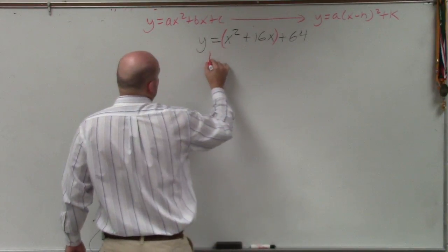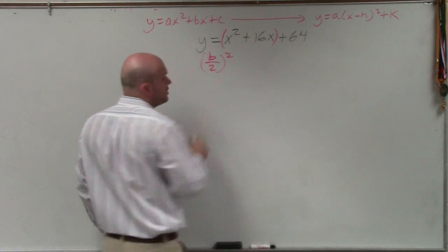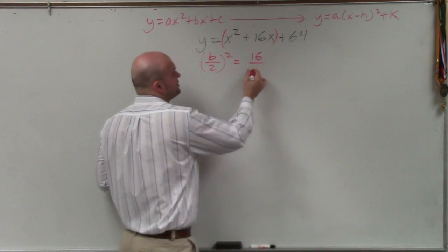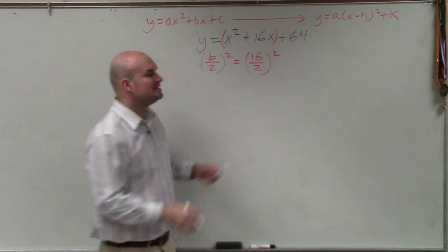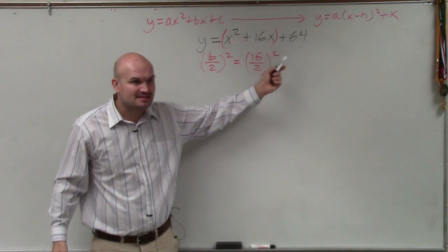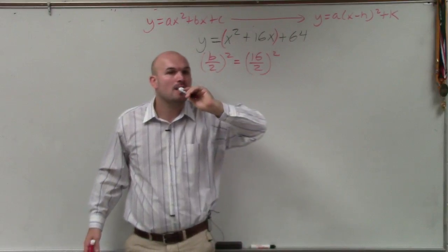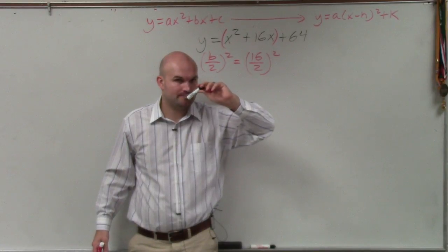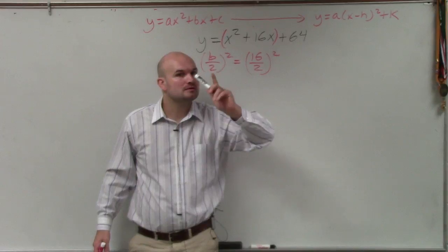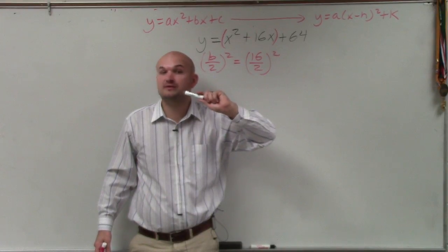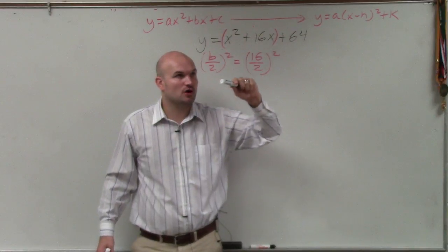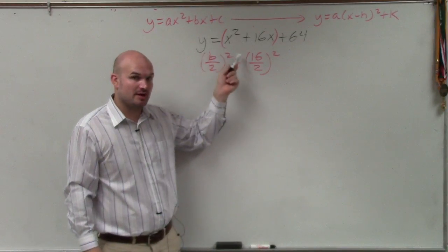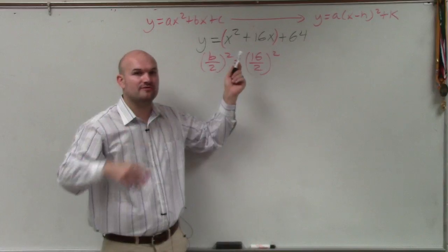Step number two is find the value that completes the square. This was done in your previous homework. So I feel pretty confident that a majority of students should have been able to at least do this, which you're basically just going to do 16 divided by 2 and then square it. Please note that b is 16, not 16x. b is the number in front of x.